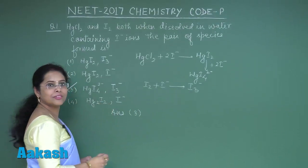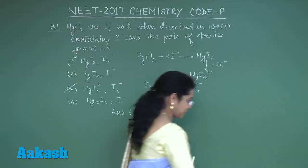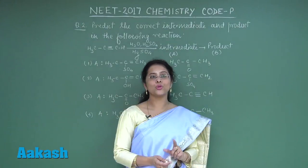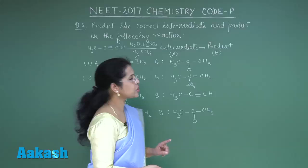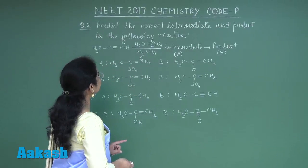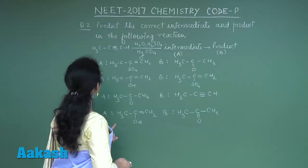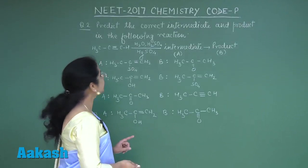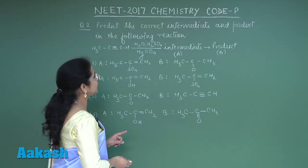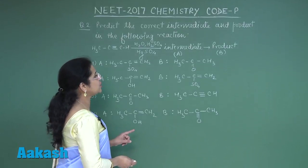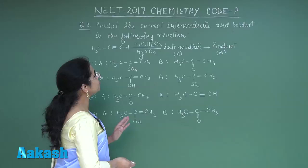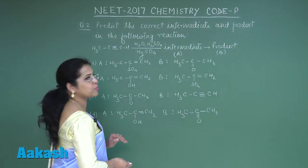Moving to the next question, question number 2: predict the correct intermediate and product in the following reaction. The initial substance taken is propine, reacts with water, sulfuric acid, and mercuric sulfate, and intermediate A is formed which is converted into product B. In this question we have to identify A and B. Four options are given.